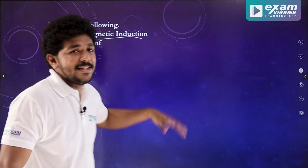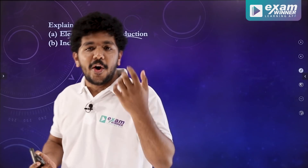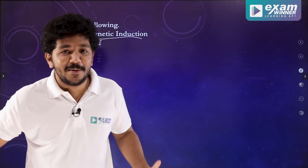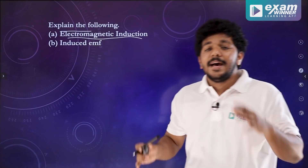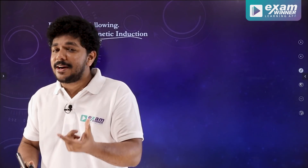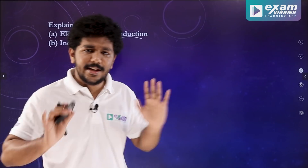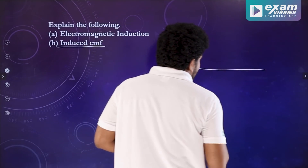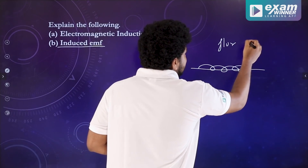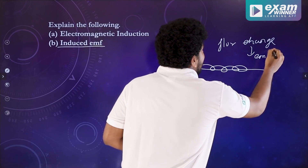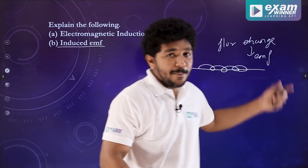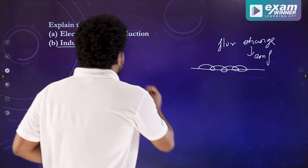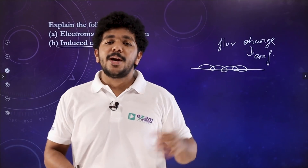Explain electromagnetic induction. When the magnetic flux linked with a coil changes, an EMF is induced. It is related to magnetic flux and magnetic field lines. It is related to the coil and wire changes. It is related to the current induced. If you have a magnetic flux change in a wire, EMF is induced.